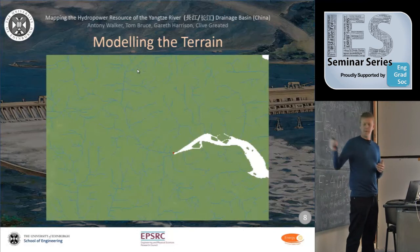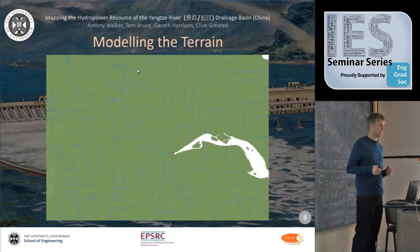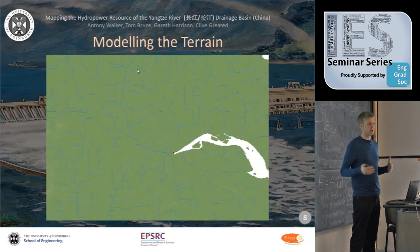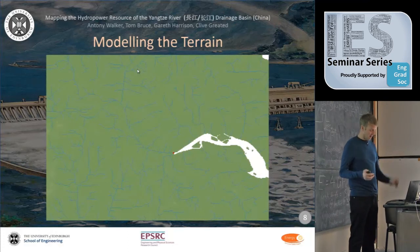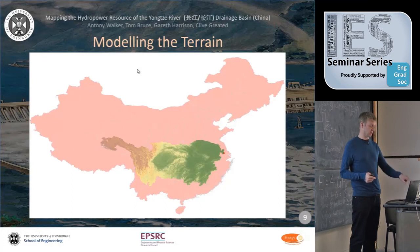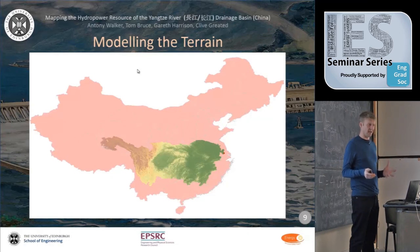Using that river map, we start from the mouth of the Yangtze — marked by a red dot — and work backwards. We know it's the mouth because there's a large estuary there and the water accumulation at that point is huge. Working back, we find all the cells that eventually drain into that area, giving us the Yangtze drainage basin — a dragon-shaped region in the southeast corner of China, approximately a fifth of the country.